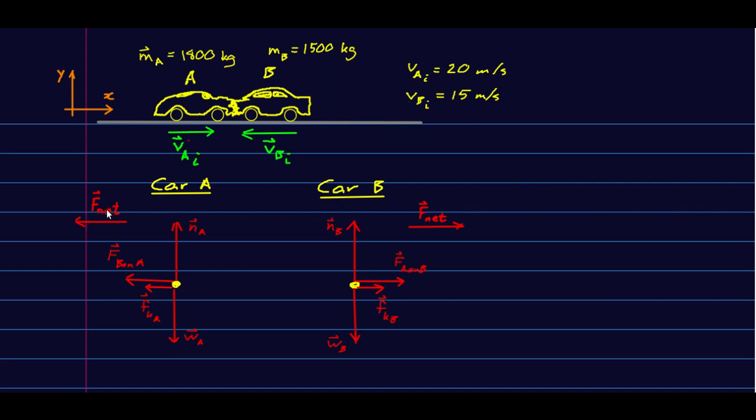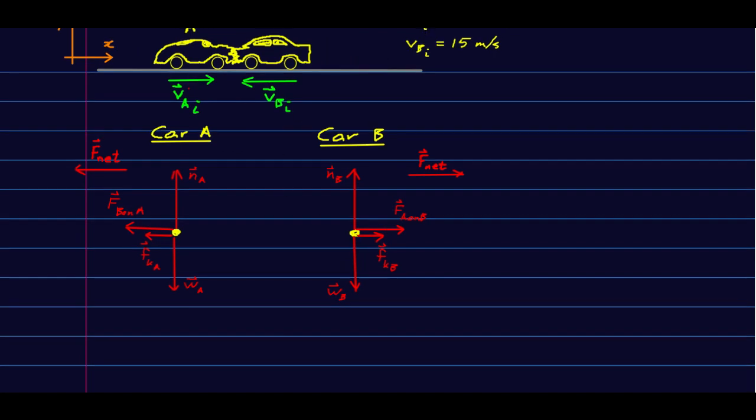And I've drawn their free body diagrams here. These are actually pretty much identical to what some of you drew in class when we were talking about Newton's third law. Hopefully you realize that we have an action-reaction pair here: F B on A is the same as F A on B.